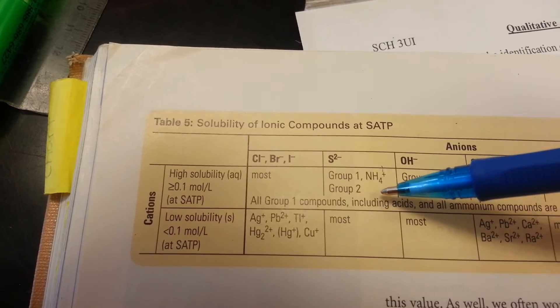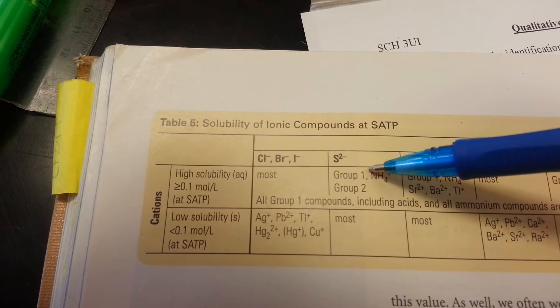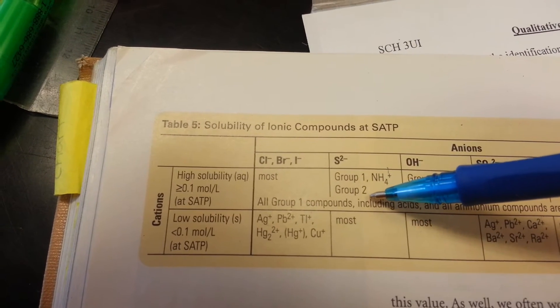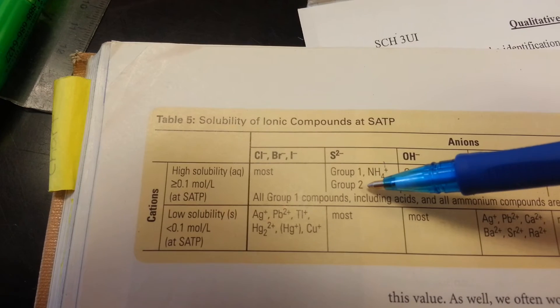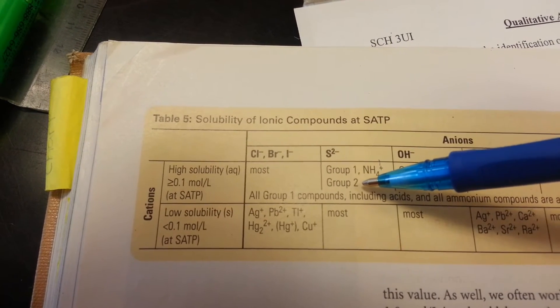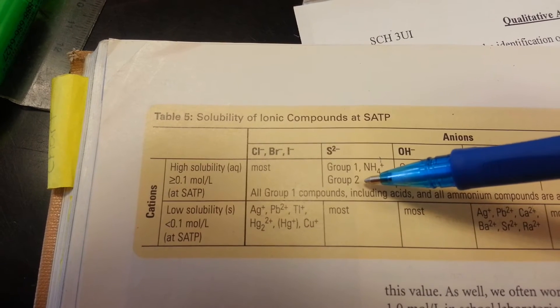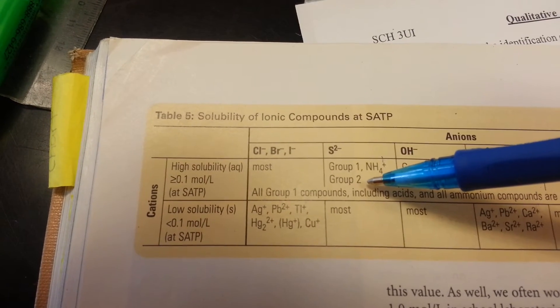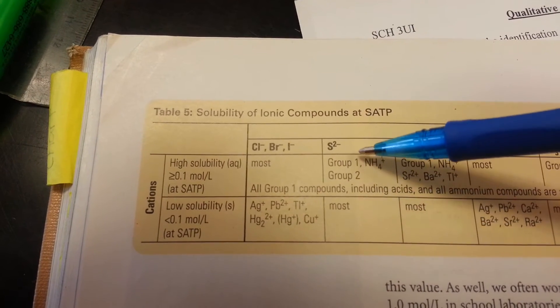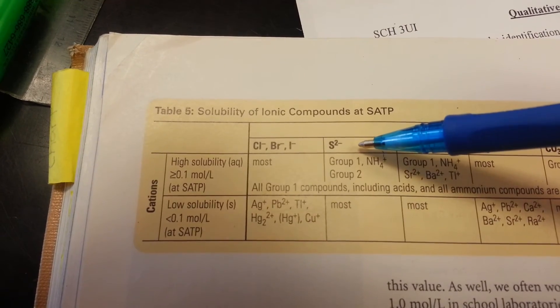Column number two, the sulfides, group one and group two. Sometimes this can be a little bit ambiguous, but as I've said, calcium is a group two metal. Thus, it will not create a precipitate. We will not record calcium creating an insoluble product with sulfide.